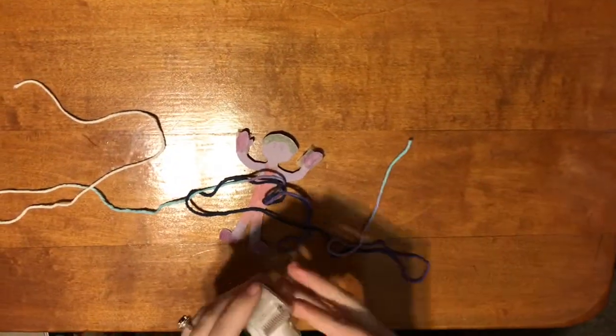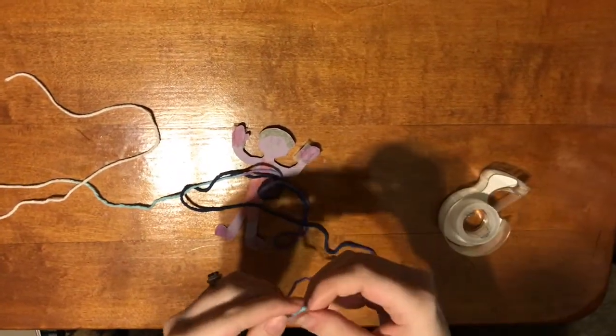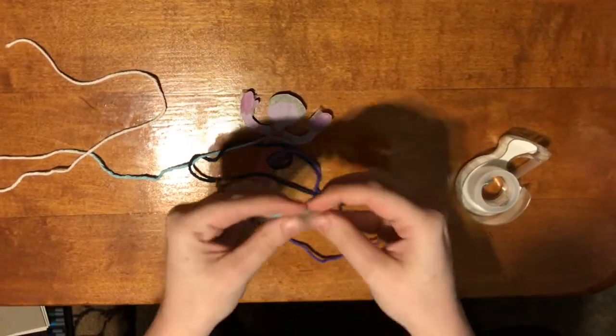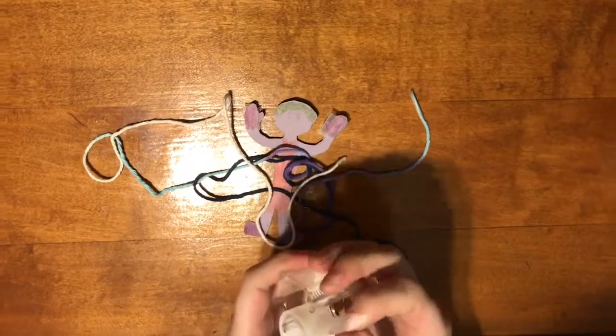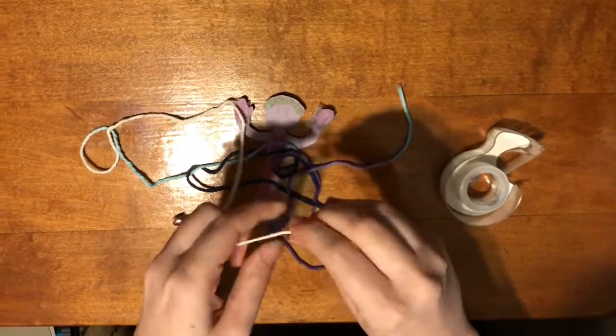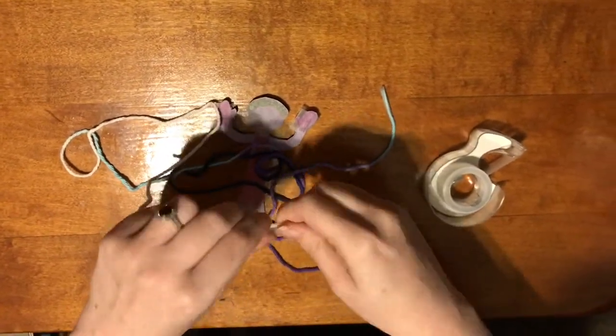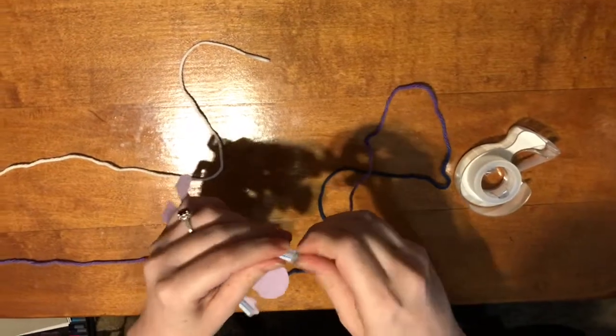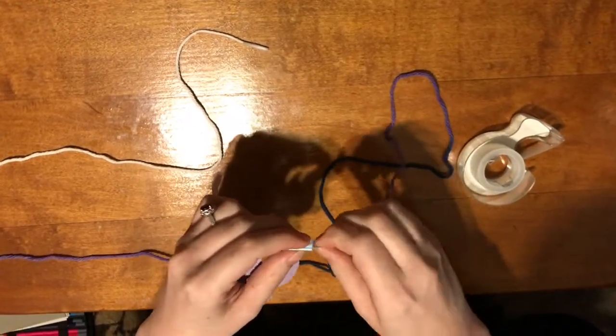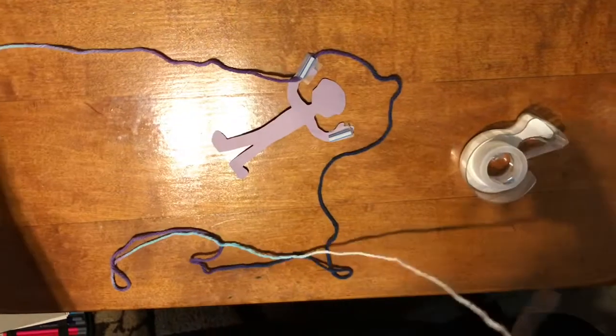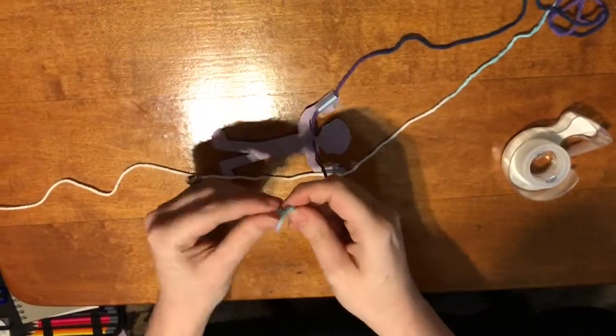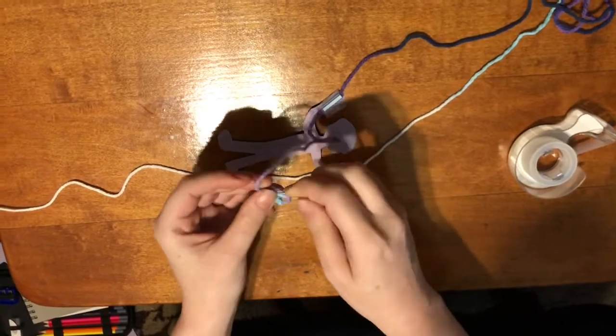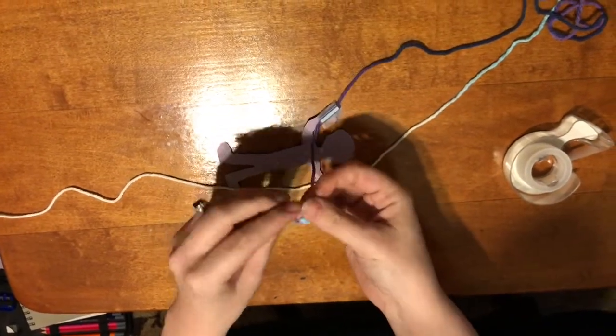Take a length of string and wrap a little bit of tape on each end. This will help us push the string through the straws. Make sure your string goes down towards the acrobat's feet. Tie some knots at the bottom ends of your string so that they won't slip out.